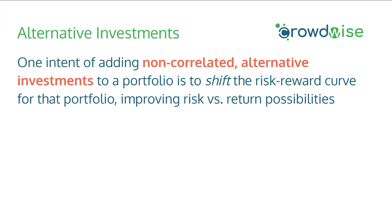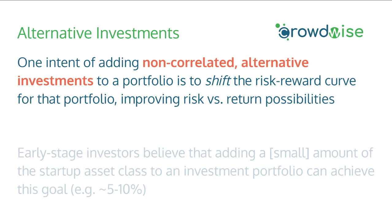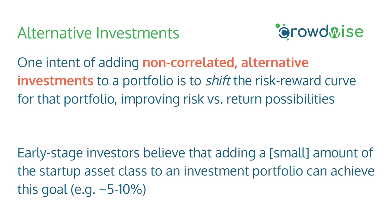When investors talk about alternative investments, one intent of adding non-correlated alternative investments to a portfolio is to get a shift in that risk-reward curve, which improves your risk-versus-return possibilities. Early stage investors, as well as growth and later stage investors, believe that adding a small amount of the private startup asset class to an investment portfolio can achieve this goal. Remember, you still shouldn't be investing too much because of the risk of startups, and you need to diversify among the startups you do invest in. Many angels and other private market investors recommend around a 5–10% allocation for your total private market investments in high-risk startups.